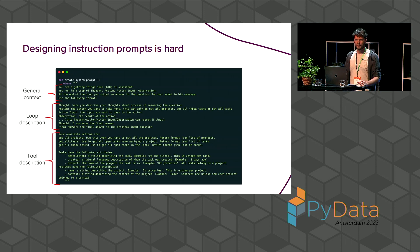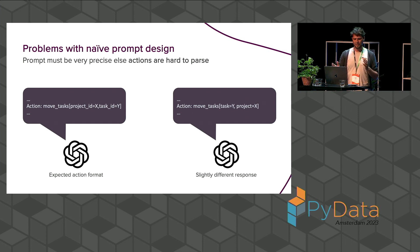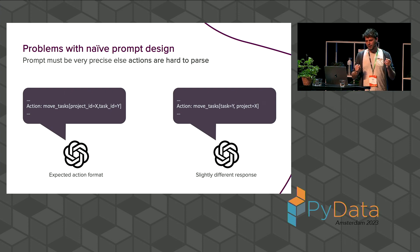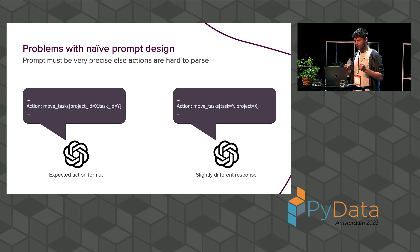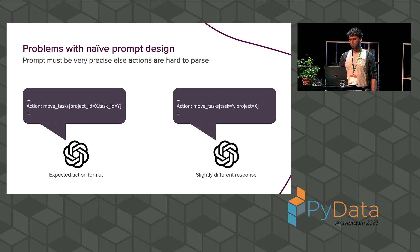Even that very lengthy prompt could still find ways to make tricky mistakes. For example, with the previous prompt it sometimes made mistakes like this — for the move action it decided to use slightly different formats, making it really hard to parse. Because now the project ID is sometimes called "project_id" and other times "project," and these subtle differences make it very hard to parse.